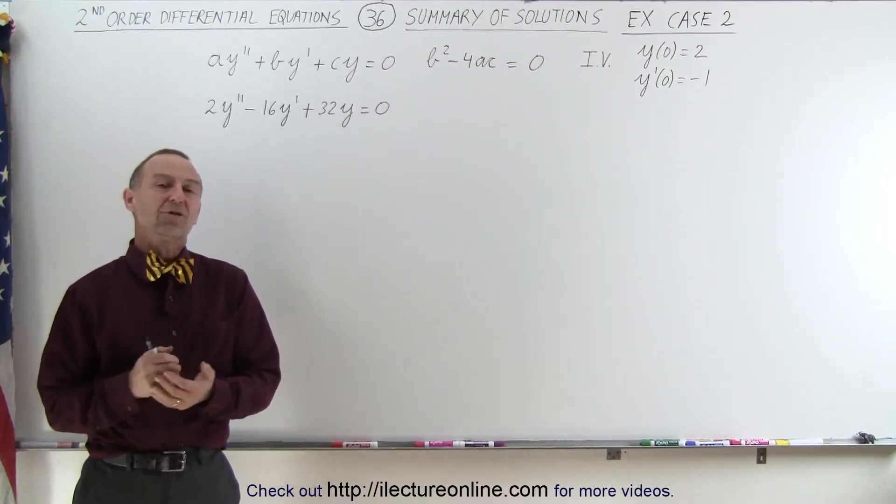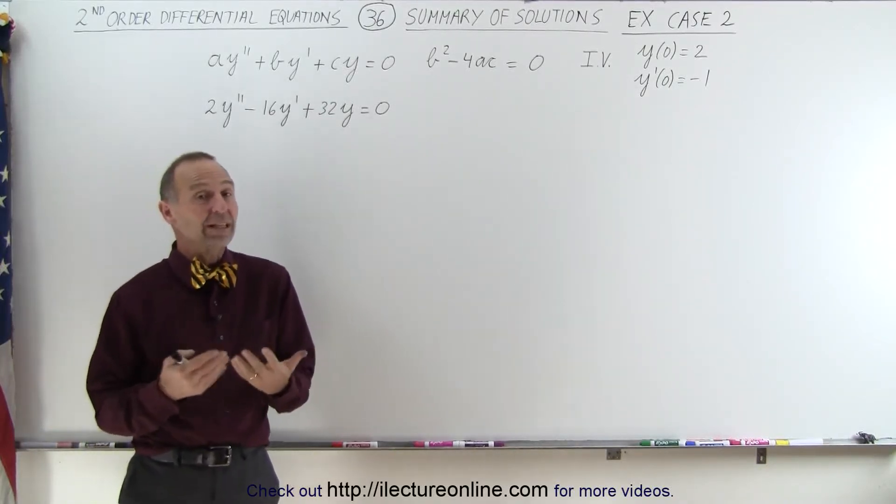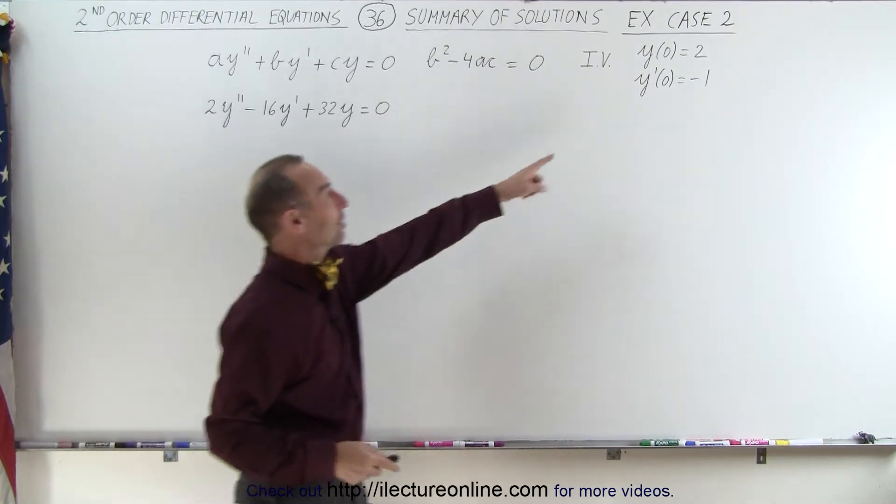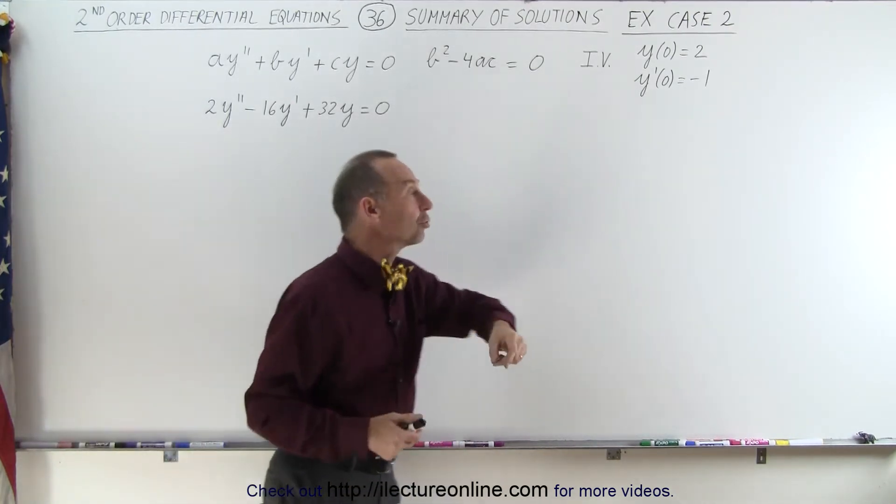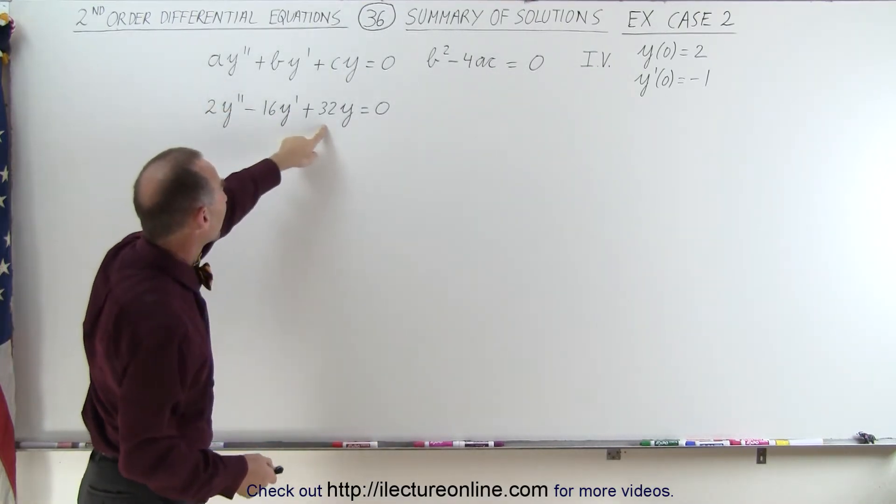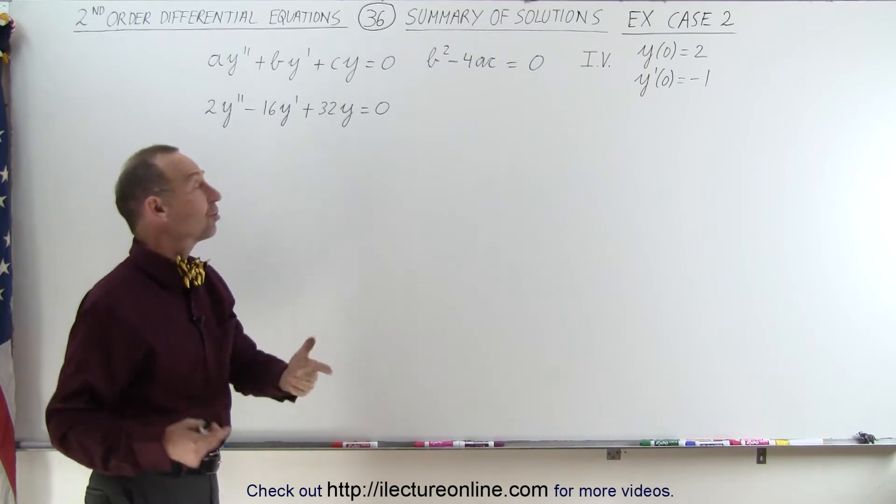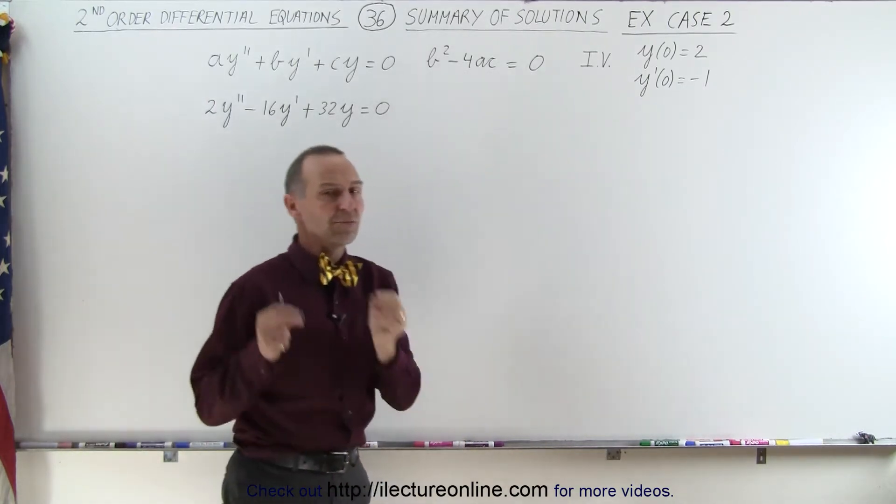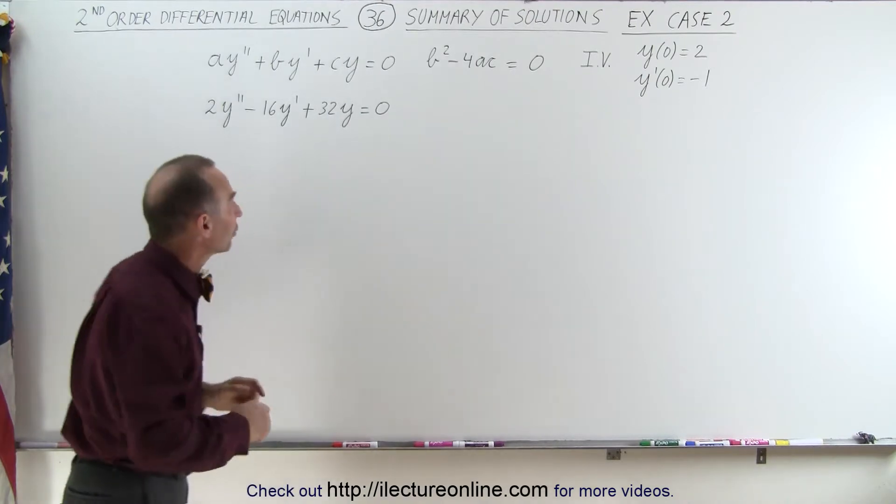Welcome to ElectronLine. Here's our second case, our second example of how to find the general solution, and since they also gave us the initial values, the exact solution of this original differential equation. Now here's the example we're going to be working with, and the assumption is that b squared minus 4ac is going to be equal to zero, which means there's only going to be one root in the solution.